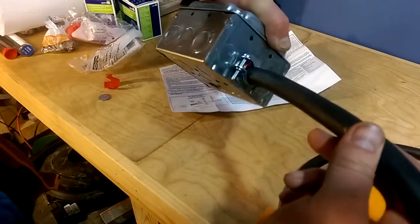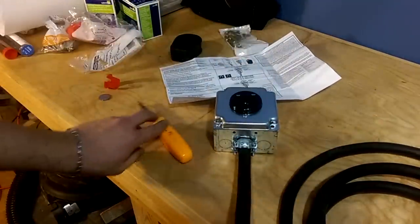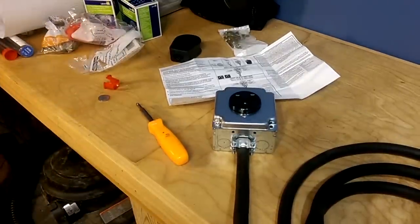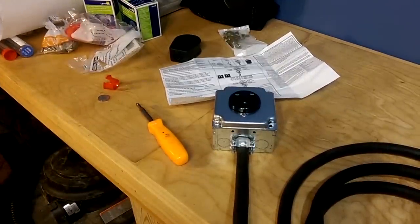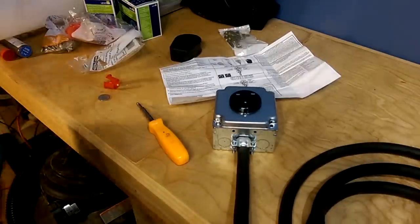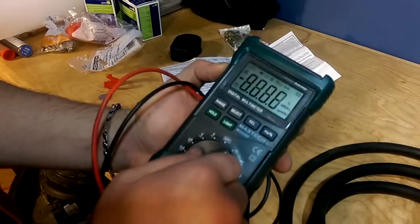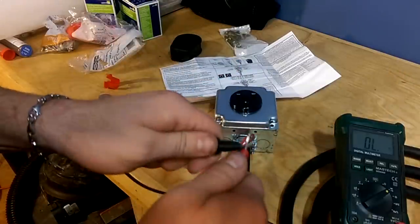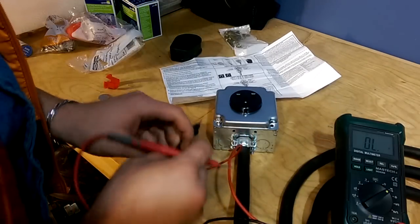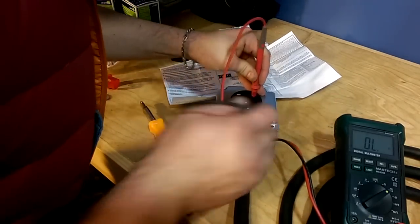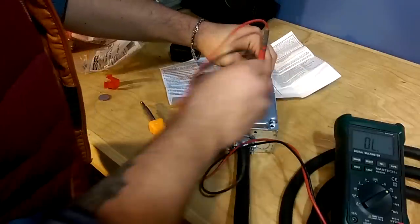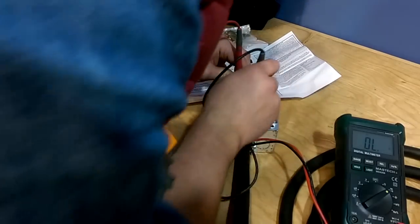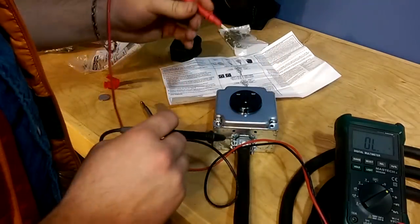So yeah, that looks pretty good. And last thing we'll do is we'll test the continuity to make sure there's no shorts. So now this will beep if there's any shorts in the wire. So these two don't, not to the housing, not to the housing, not to the ground. But they definitely short together. So that's good.